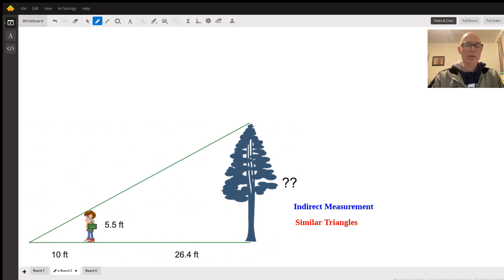We have a young man over here who's 5.5 feet tall. We have a tree here that's an unknown height, and we're going to use indirect measurement to find that height.